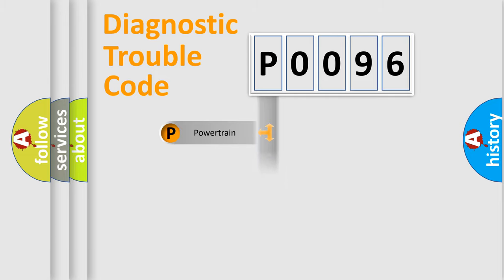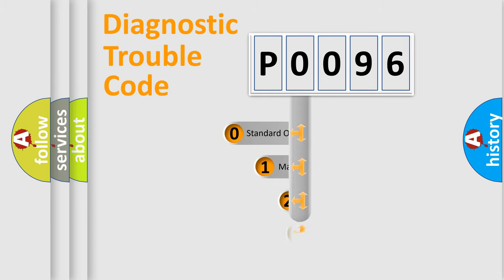Powertrain, Body, Chassis, Network. This distribution is defined in the first character code.